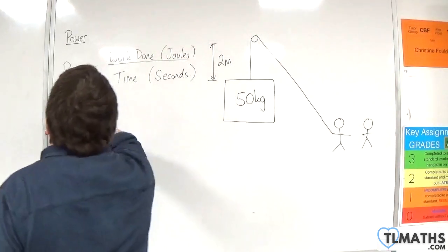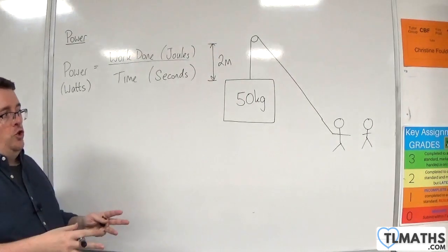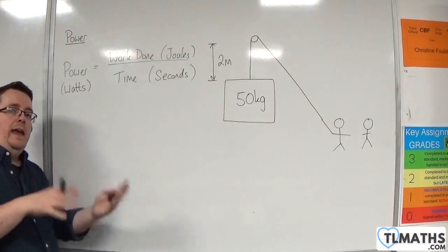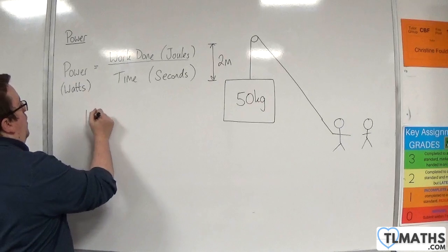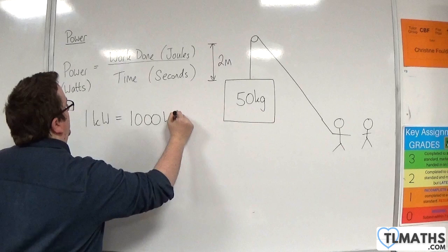Now one watt is very small. So usually we end up working in kilowatts. So one kilowatt is 1000 watts as you might expect.